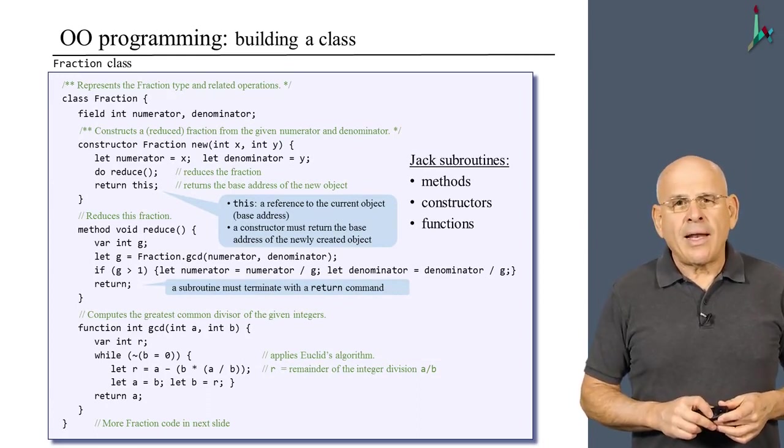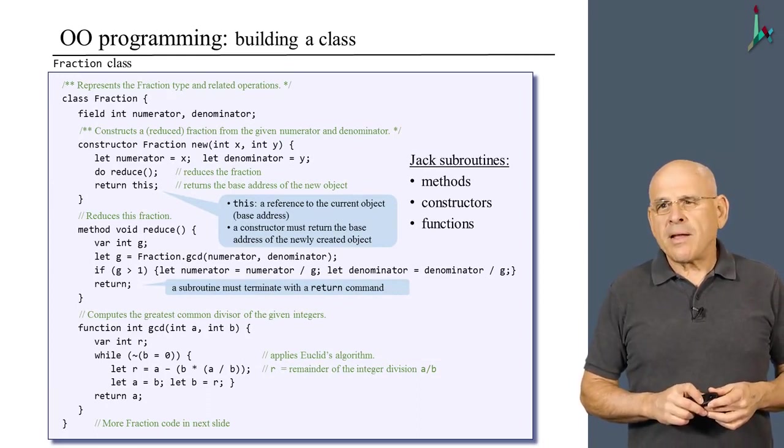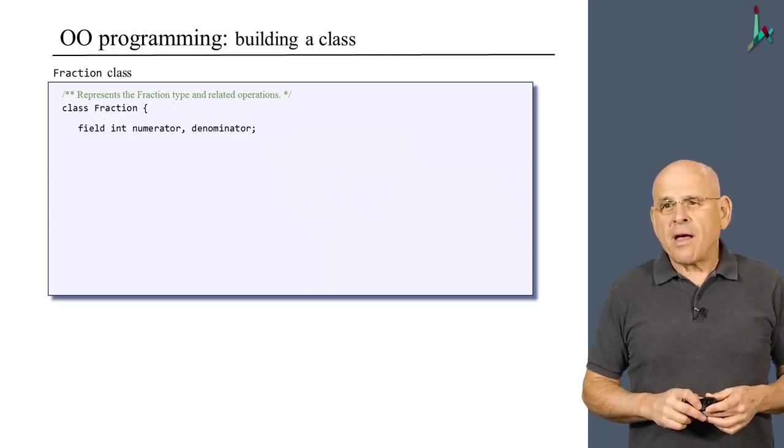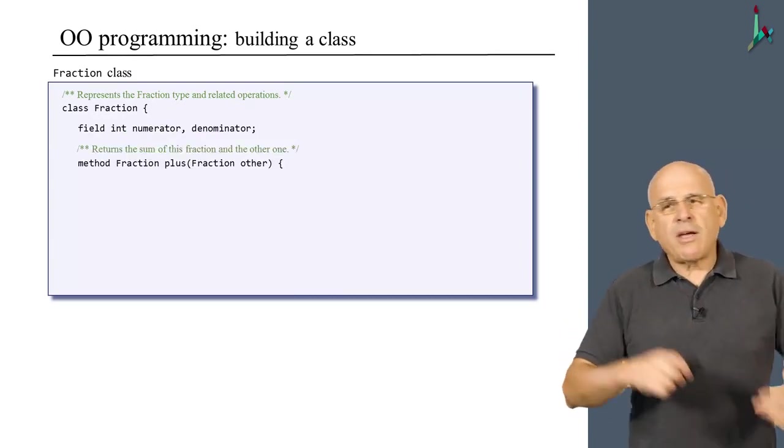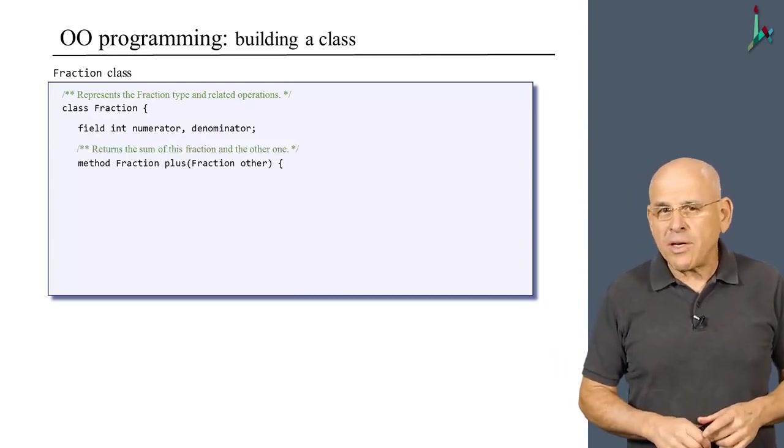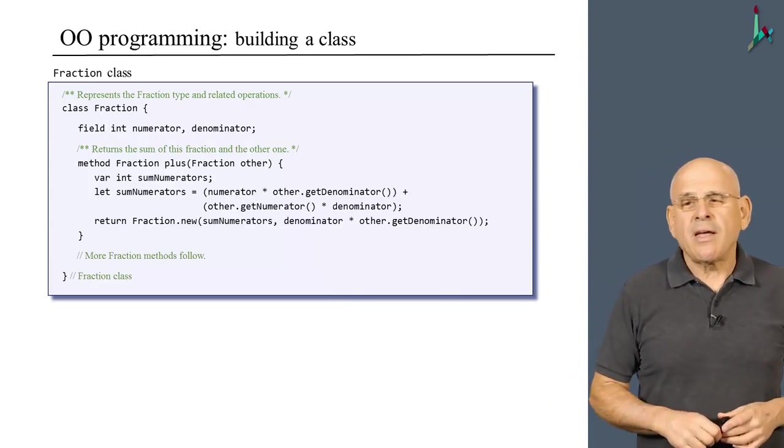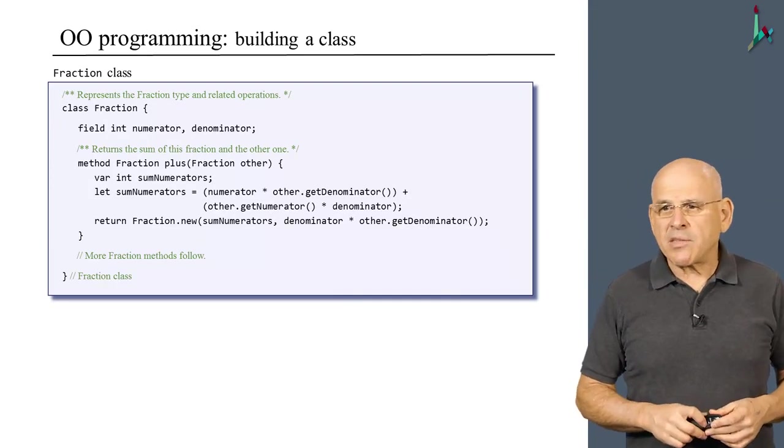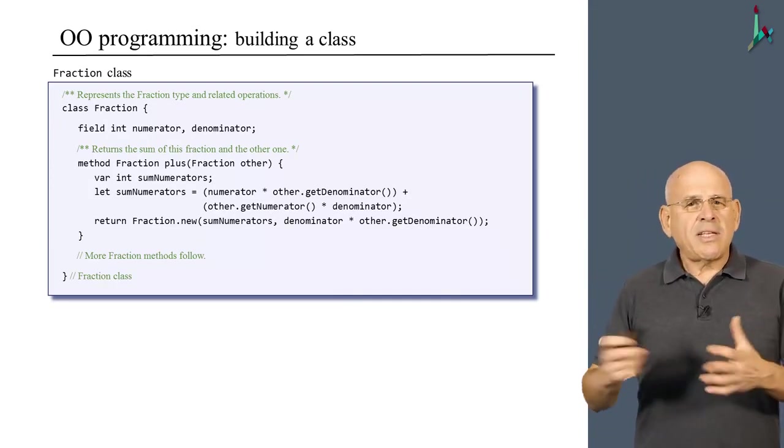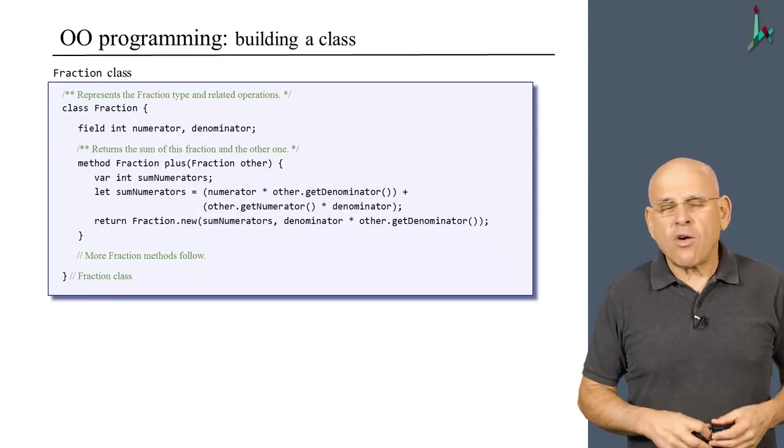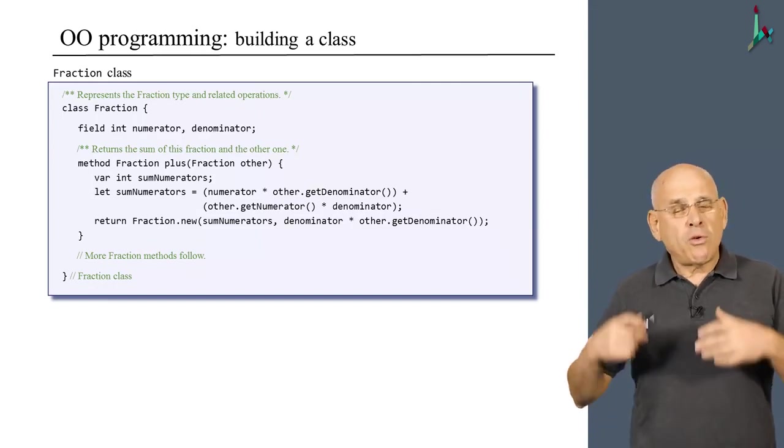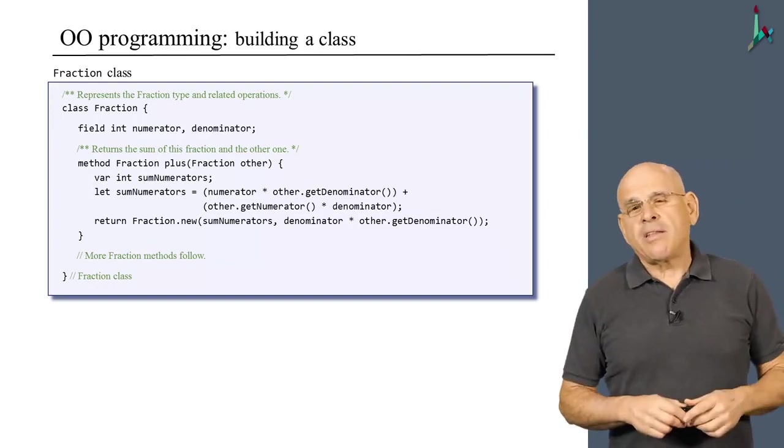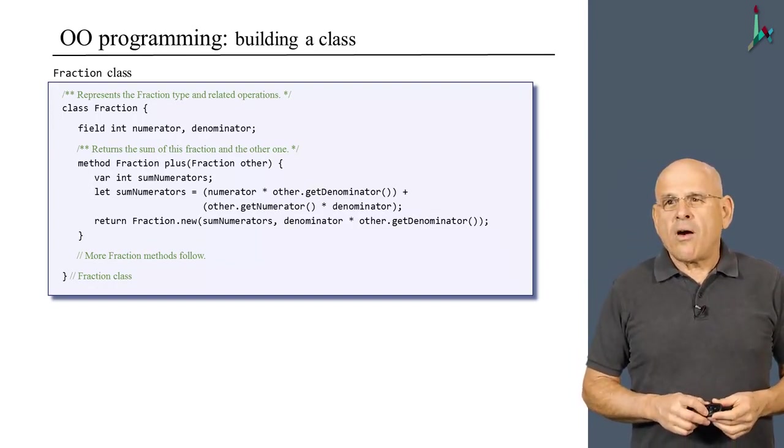All right, moving along, let us take a look at this method, plus. This method simply adds up the current object and the other object, the object that was passed to it as a parameter. And the addition is based on elementary school mathematics, which I'm not going to dwell on. So this is an example of a typical method operating on fractions. And you could have written, if you want, many more such methods to do minus, multiply, divide, invert, and so on.